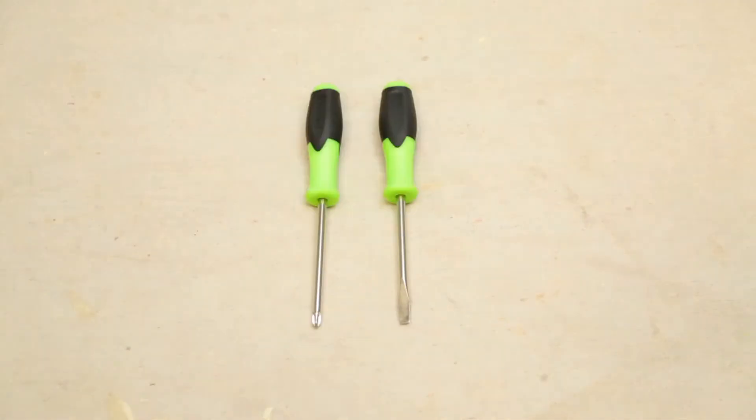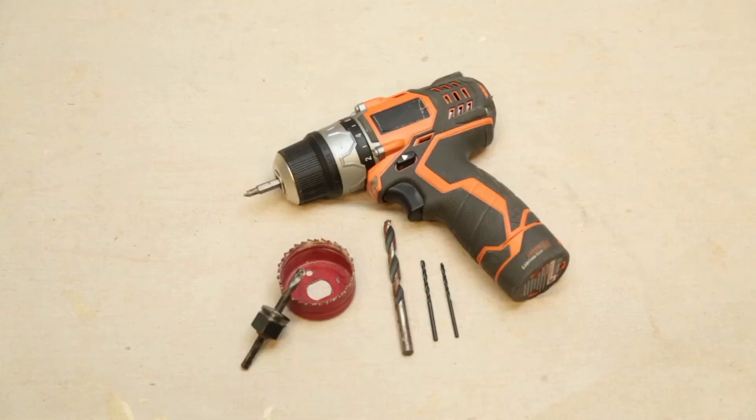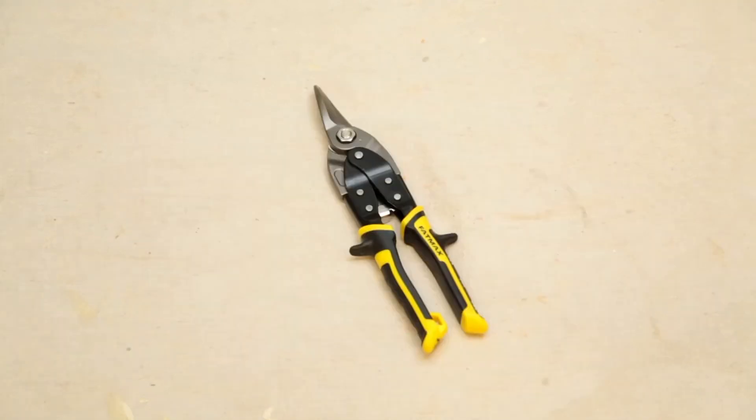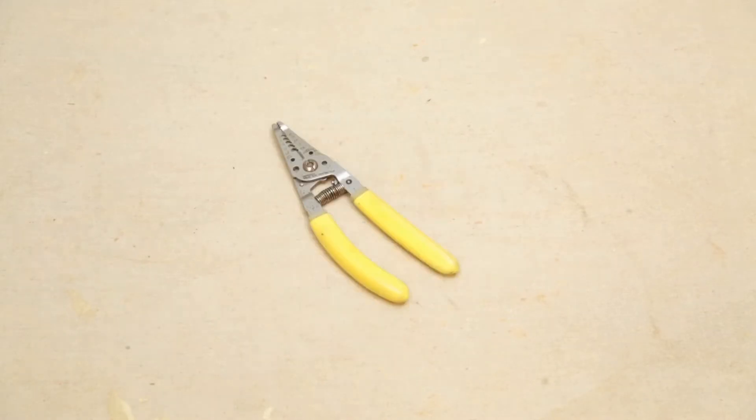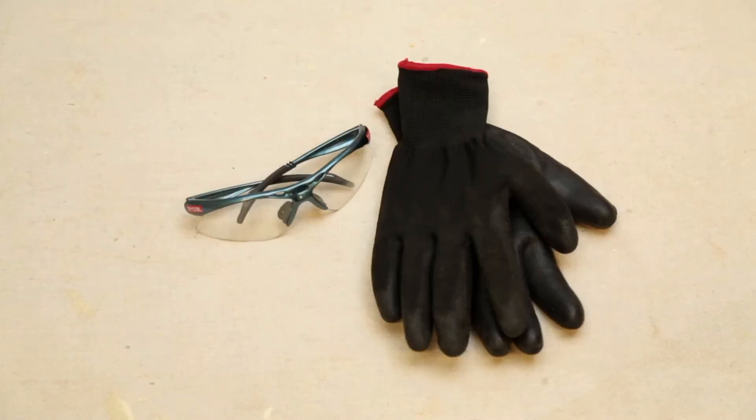Measuring tape, Phillips screwdriver, flathead screwdriver, drill with a 1 1⁄8 inch bit, 7⁄64 inch bit, 3 1⁄8 inch bit, and a 1 1⁄2 inch hole saw, a jigsaw, sheet metal shears, pliers, metal foil duct tape, scissors, pencil, wire stripper, strain relief, and safety gear.